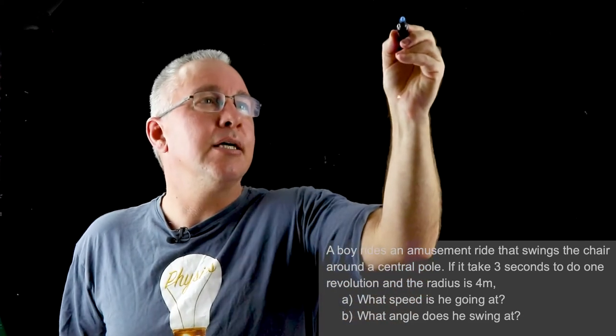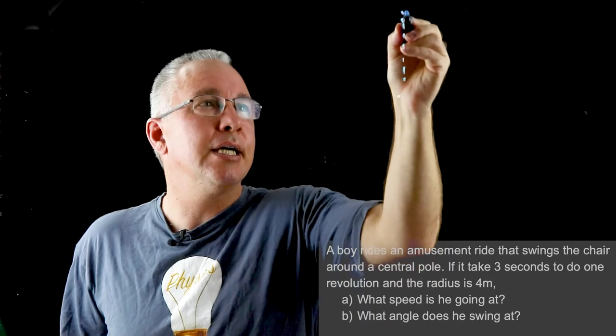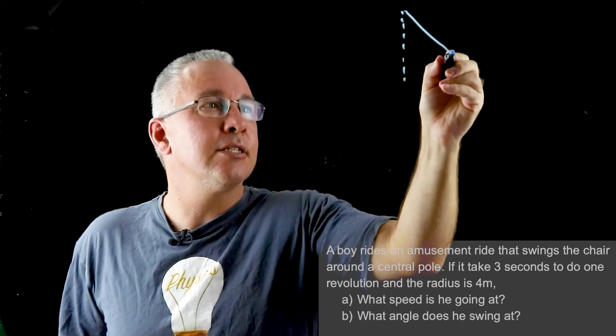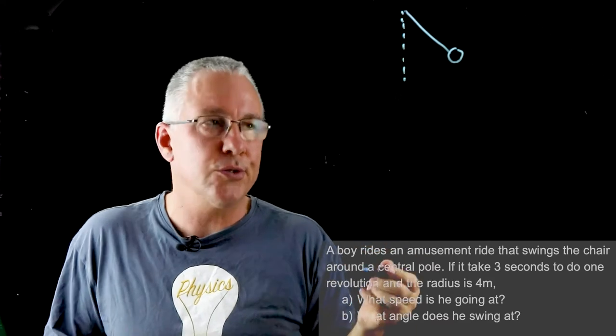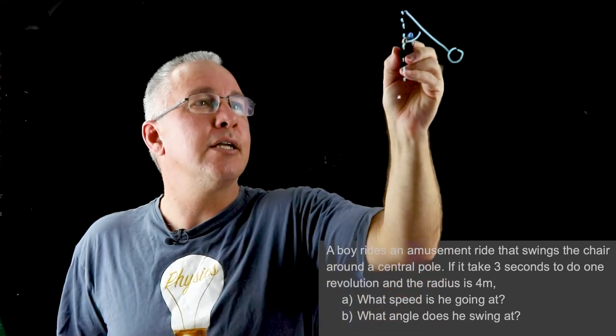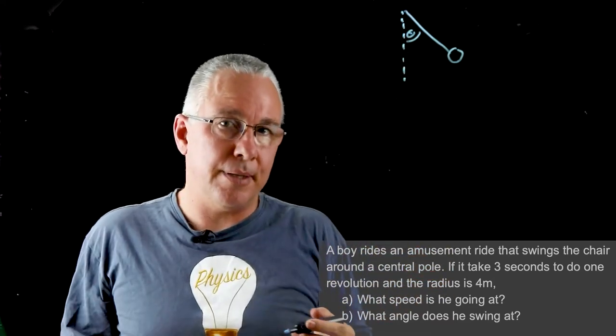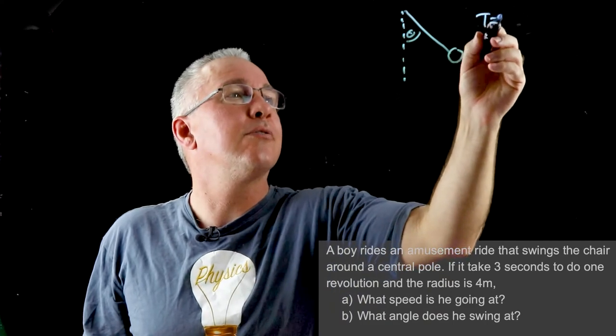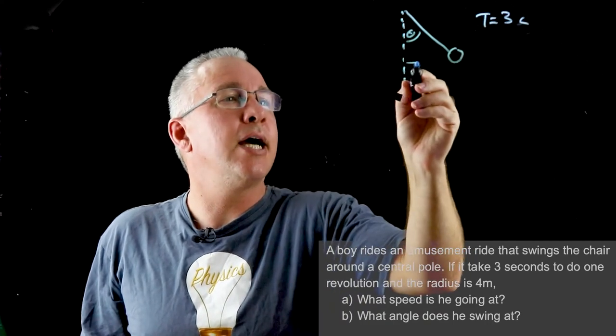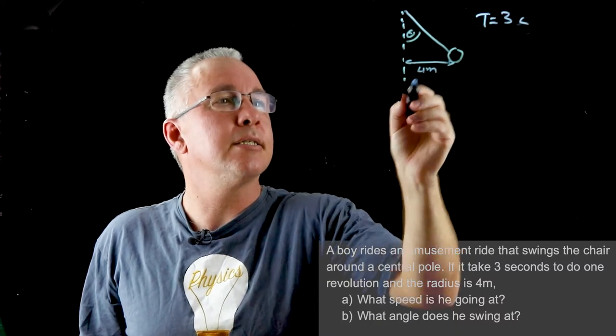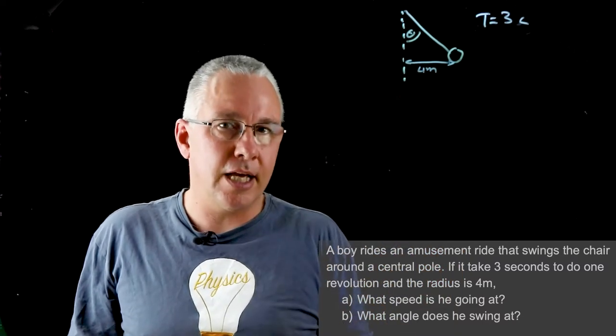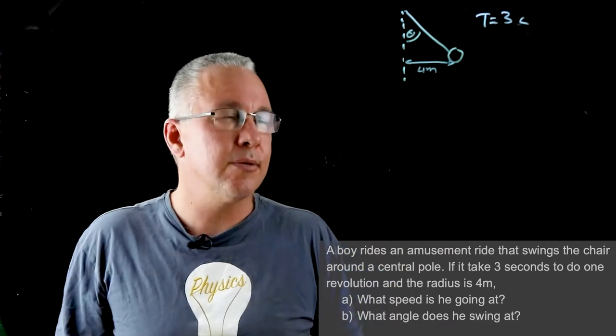So I'm going to make this very simple diagram here. What we have here is our vertical and then this is going to be the boy over here. Very simple, physics likes using blocks and circles. We know we have an unknown angle and we know that the period in this case is equal to 3 seconds and we know that the radius of which he spins at is going to be equal to 4 meters. We're asked to find how fast he's going and we're asked to find what the angle here is.